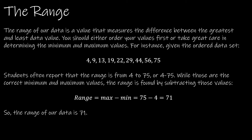The range is a value that measures the difference between the greatest and least data value. One way to do this is to order your data first — Excel makes that very easy. We want to know the minimum and maximum values, which in this case are 4 and 75. The biggest mistake students make is reporting the range as '4 to 75' — that is not the range. The range is found by subtracting the minimum from the maximum: 75 minus 4 equals 71.